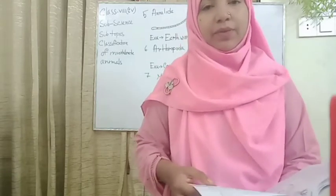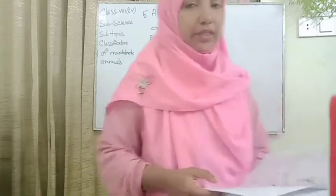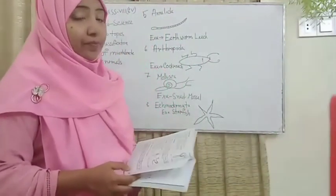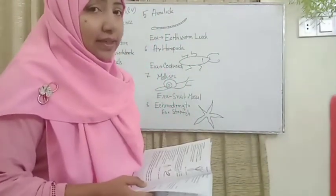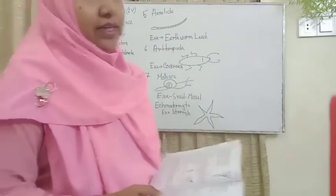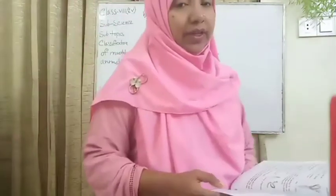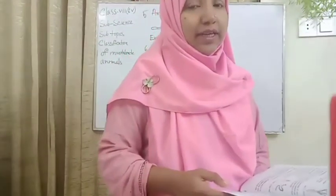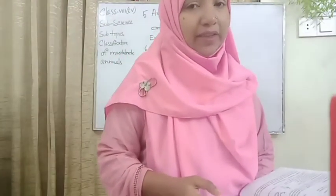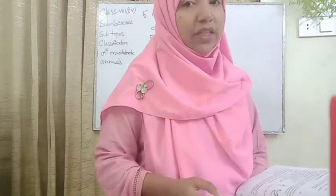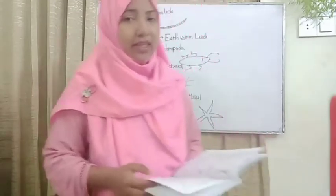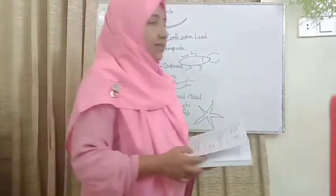Please everyone see the books. The first phylum is Annelida. These words come from Latin words. In Latin, Annelida means segmented and also ring-shaped structure.